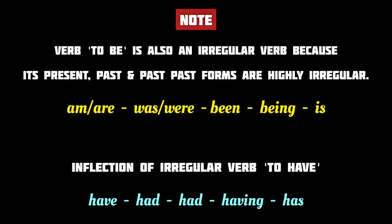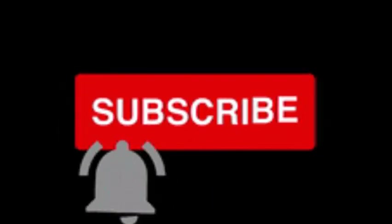Finally, note that the verb 'to be' and the verb 'to have' are also irregular verbs. 'To be' in particular is a highly irregular verb: am or are in present tense, was or were in past tense, and been in past participle form. The verb 'to have' inflects as 'had' both in simple past tense and in past participle form.